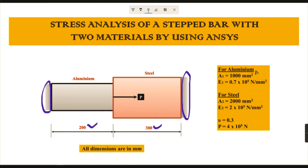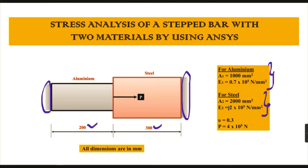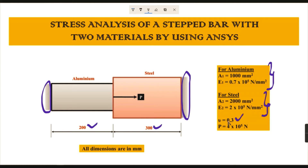For aluminum the length is 200mm and for steel it is 300mm. The additional inputs we are going to give in ANSYS: for aluminum, the area is 1000 mm² and Young's modulus is 0.7×10⁵ N/mm². For steel, the area is 2000 mm² and Young's modulus is 2×10⁵ N/mm². The common data for both materials is Poisson's ratio of 0.3, and a load is acting exactly at the center — the interface between aluminum and steel.